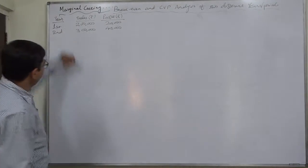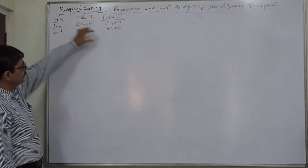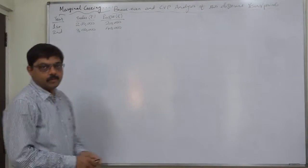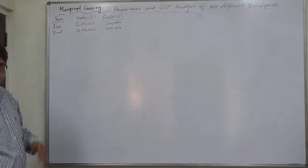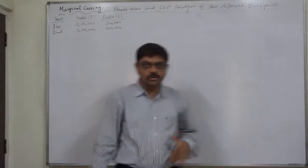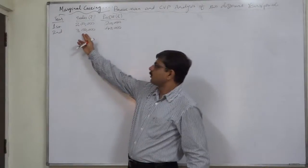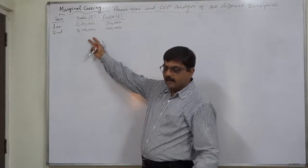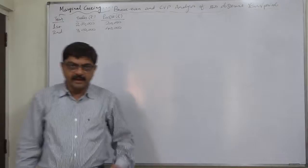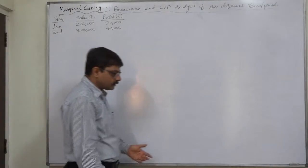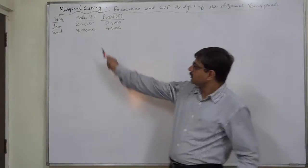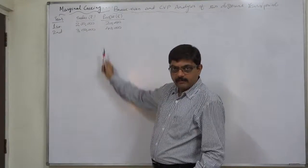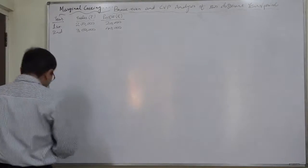If information regarding sales and profits of two different periods are available, it is advisable to follow a pattern of solving the problem. First, always calculate the PV ratio or contribution, whichever is possible. If sales quantity is available, we can calculate contribution per unit. If sales values are available, we can calculate the PV ratio. Let us first of all calculate the PV ratio.